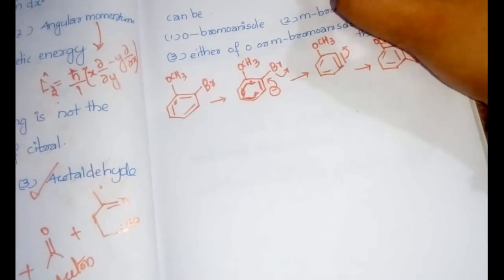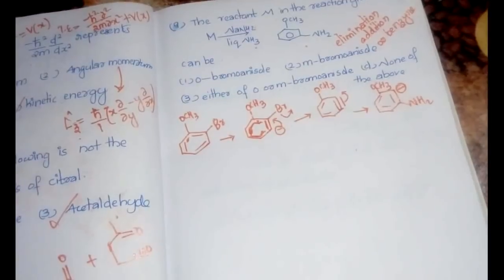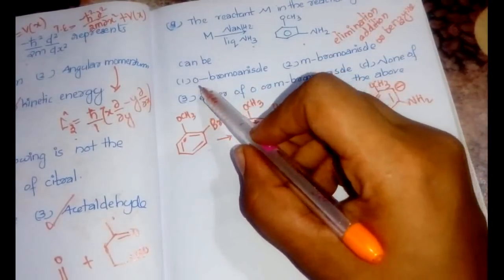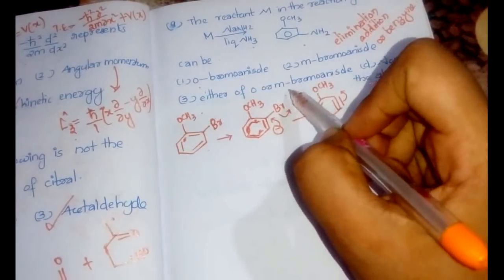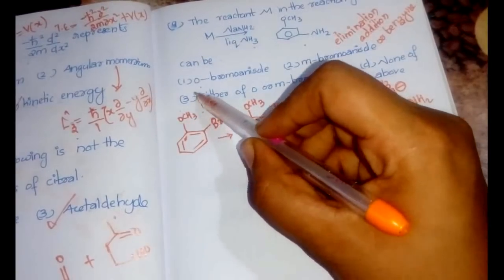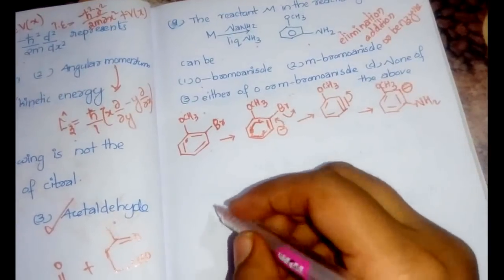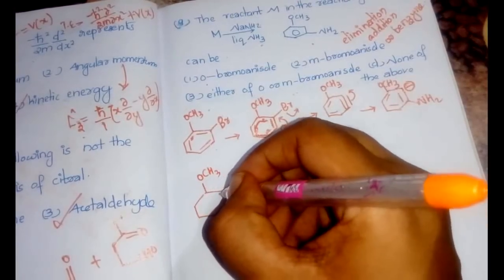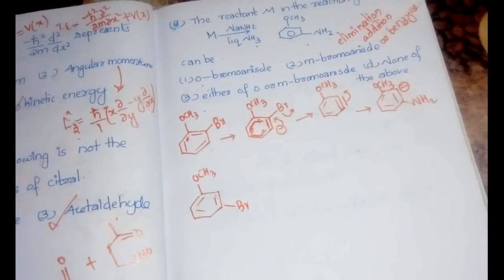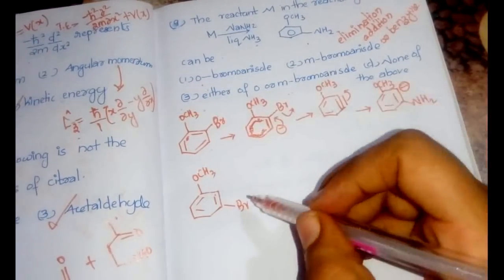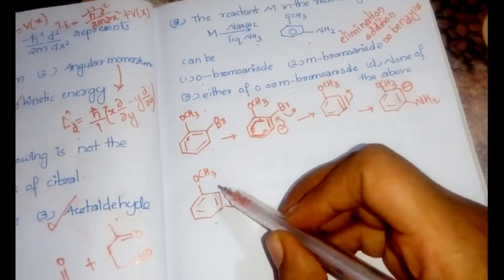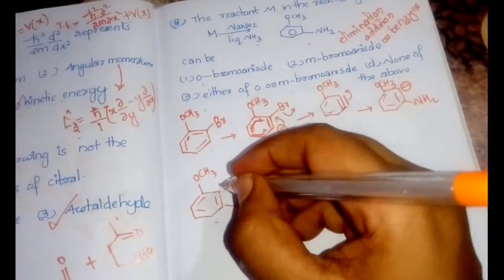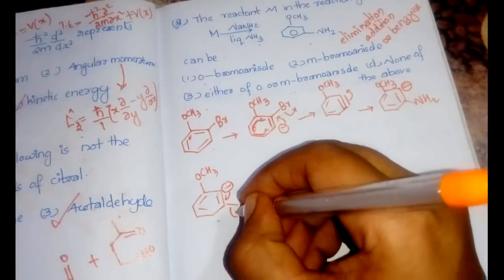After hydrogen abstraction, the product contains an NH₂ group. So o-bromoanisole can form this product — the answer could be option 1 or 3. Checking m-bromoanisole: with bromine at the meta position and OCH₃ present, a carbanion forms and bromine leaves to again produce benzyne.